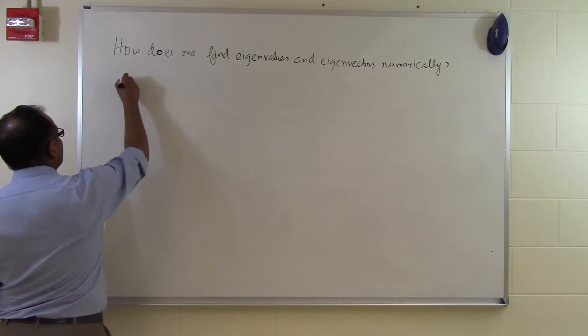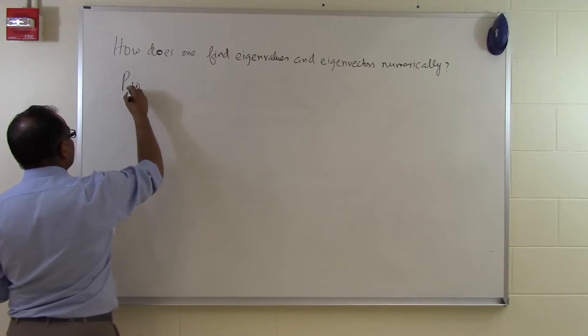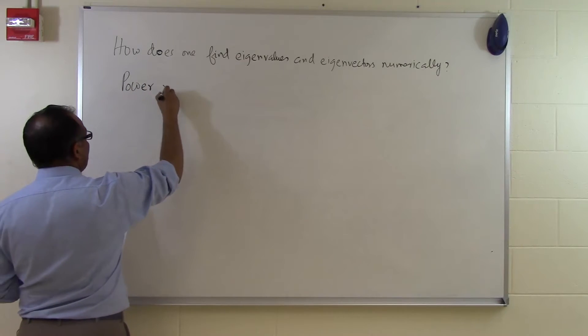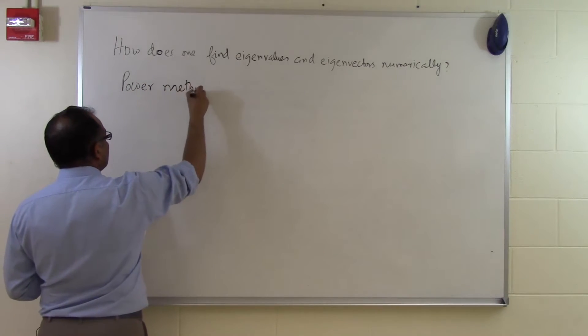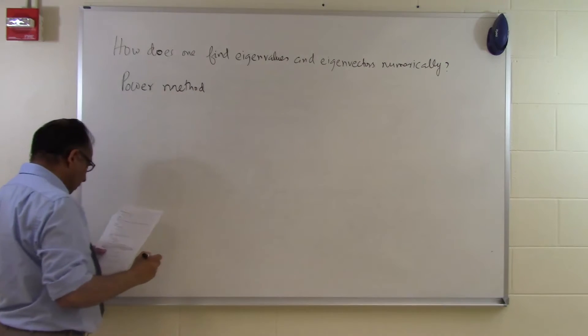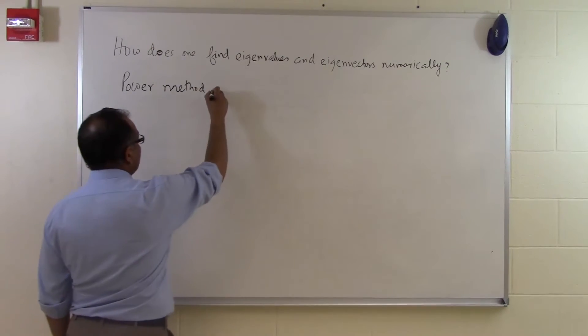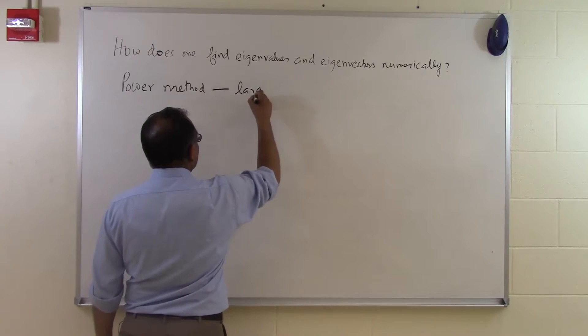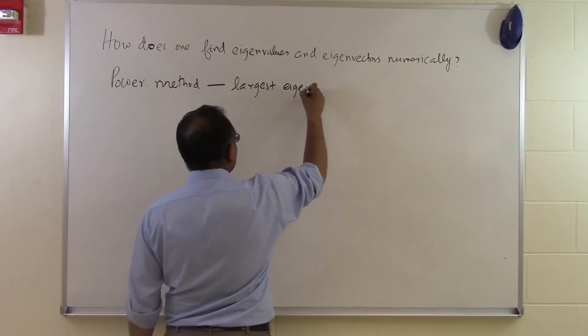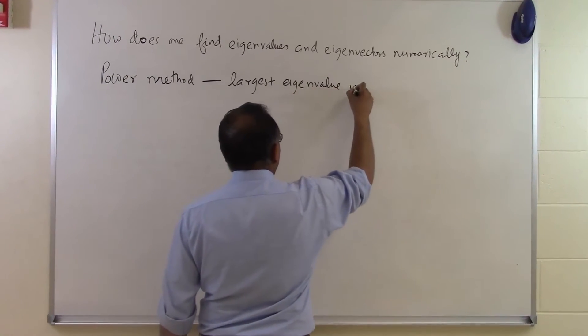One of the methods used to find eigenvalues and eigenvectors is called the power method. The power method only finds the largest eigenvalue in magnitude.